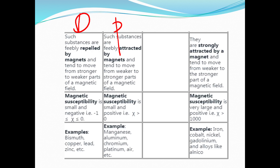Diamagnetic materials move from stronger to weaker parts of the magnetic field — strong field to weak field. Magnetic susceptibility is negative for diamagnetic materials. Paramagnetic susceptibility is small and positive. Ferromagnetic susceptibility is very large and positive.